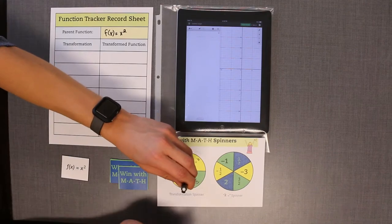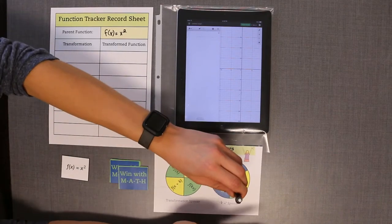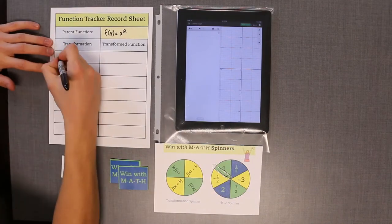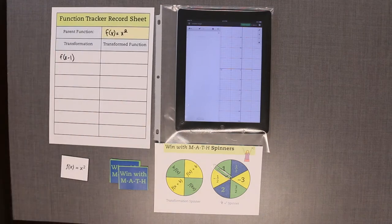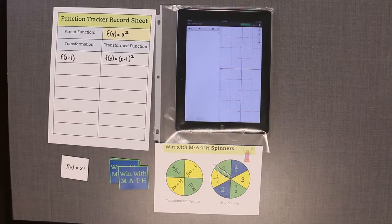On your turn, spin the transformation spinner, spin the k equals spinner, then write the transformation in the transformation column of the function tracker record sheet. Explain your choice.